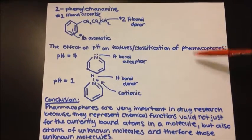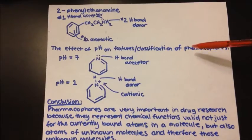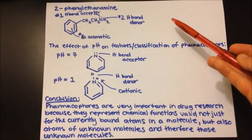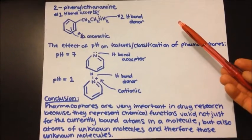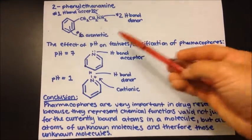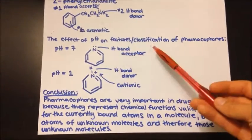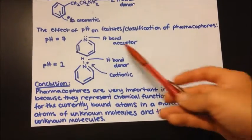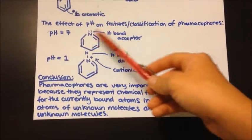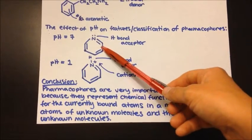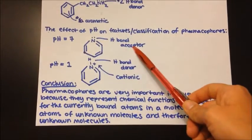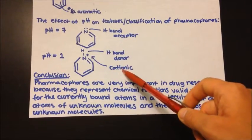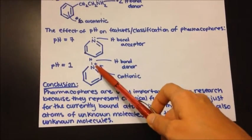The differences from epinephrine, amphetamine, and mescaline is that the molecules the computer program finds may not be physiologically active. One of the reasons for this is the effect that pH has on the features and classifications of pharmacophores. For example, at pH 7, a molecule with an aromatic ring and a nitrogen is an H-bond acceptor, whereas at pH 1, it is an H-bond donor and becomes cationic because it has a positive charge on the nitrogen.